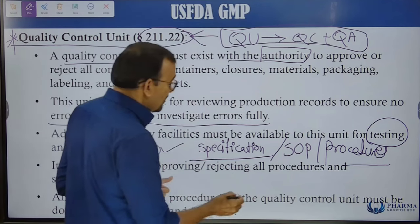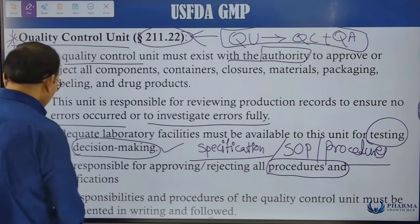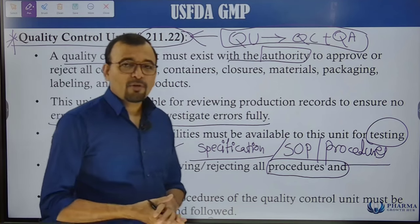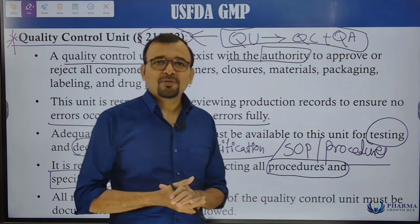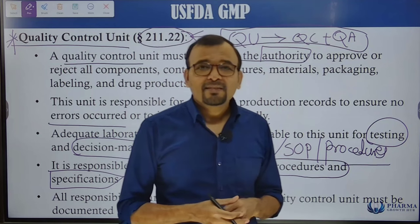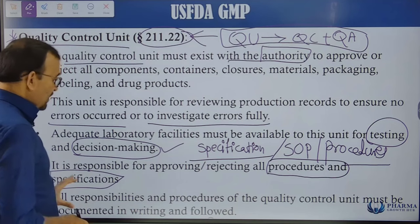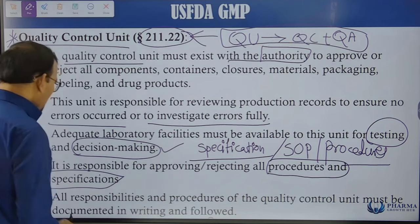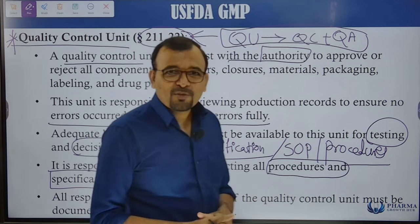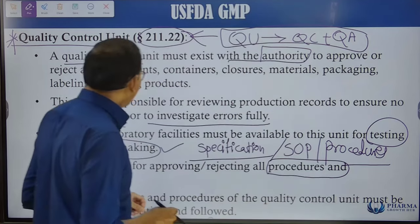The Quality Control Unit is also responsible for approving or rejecting all procedures and specifications — meaning what should be the acceptance criteria for a given product in terms of different parameters like assay, identification, related substances, or dissolution. All responsibilities and procedures of the QC unit must be documented in writing and followed, including SOPs.